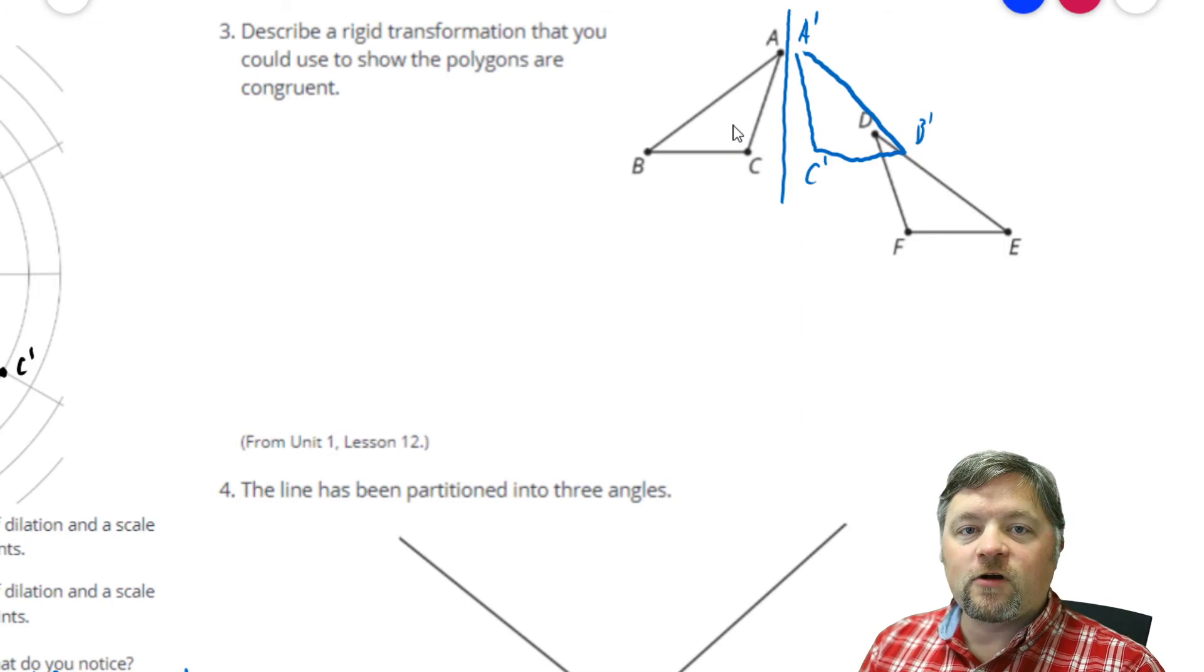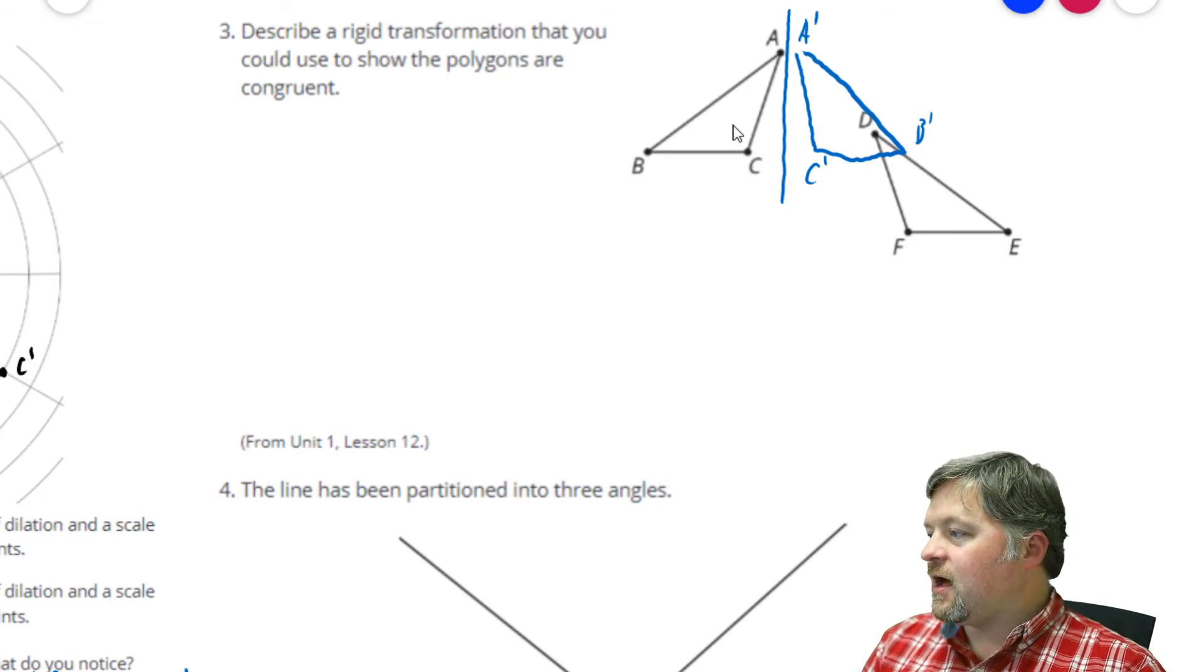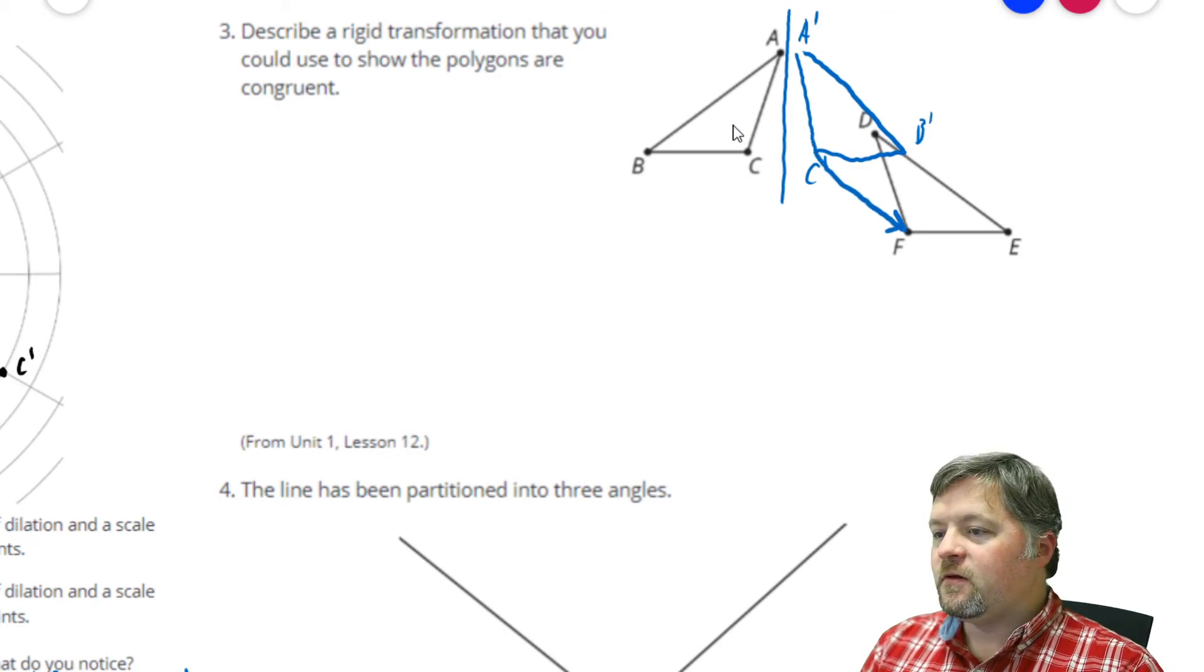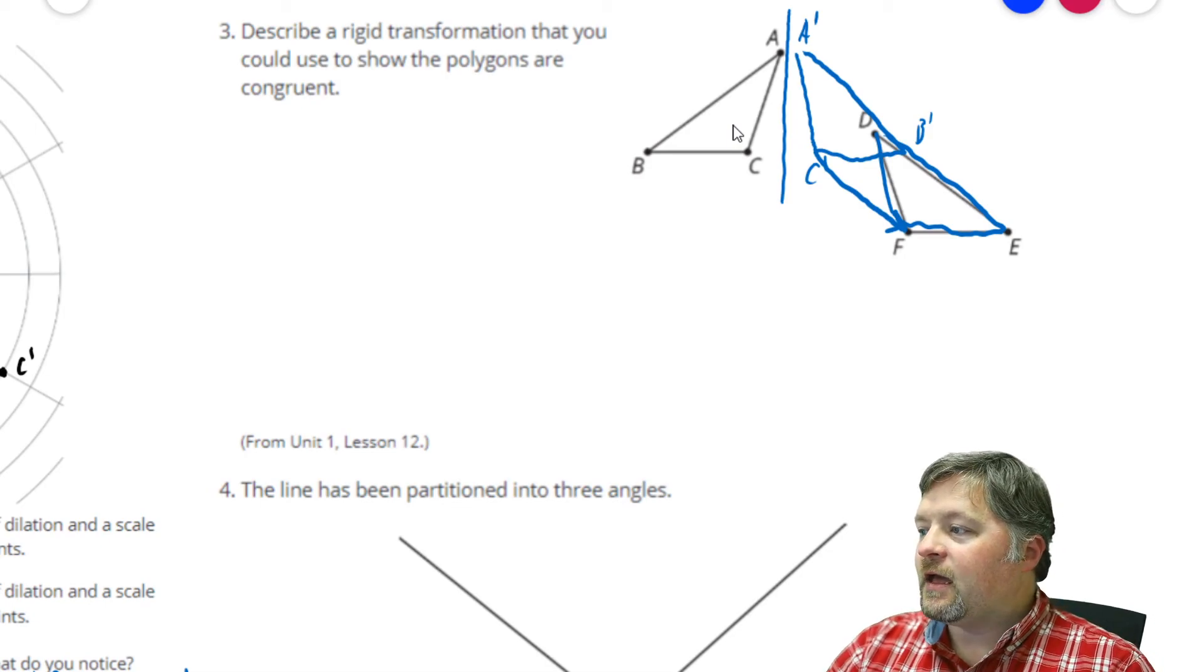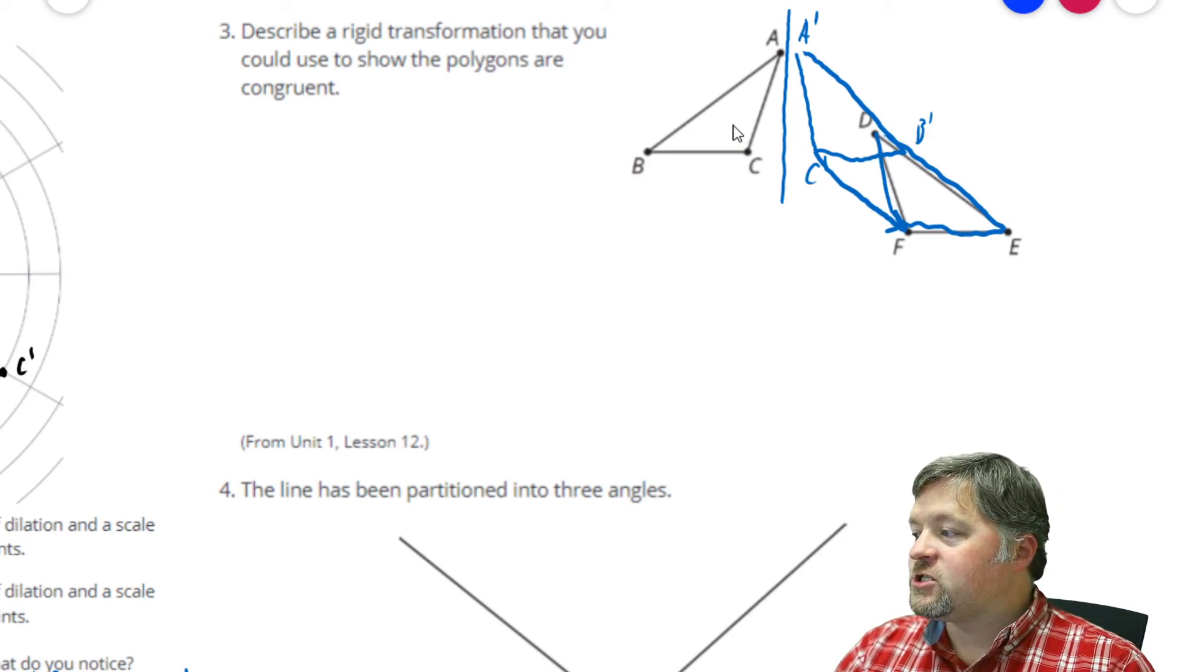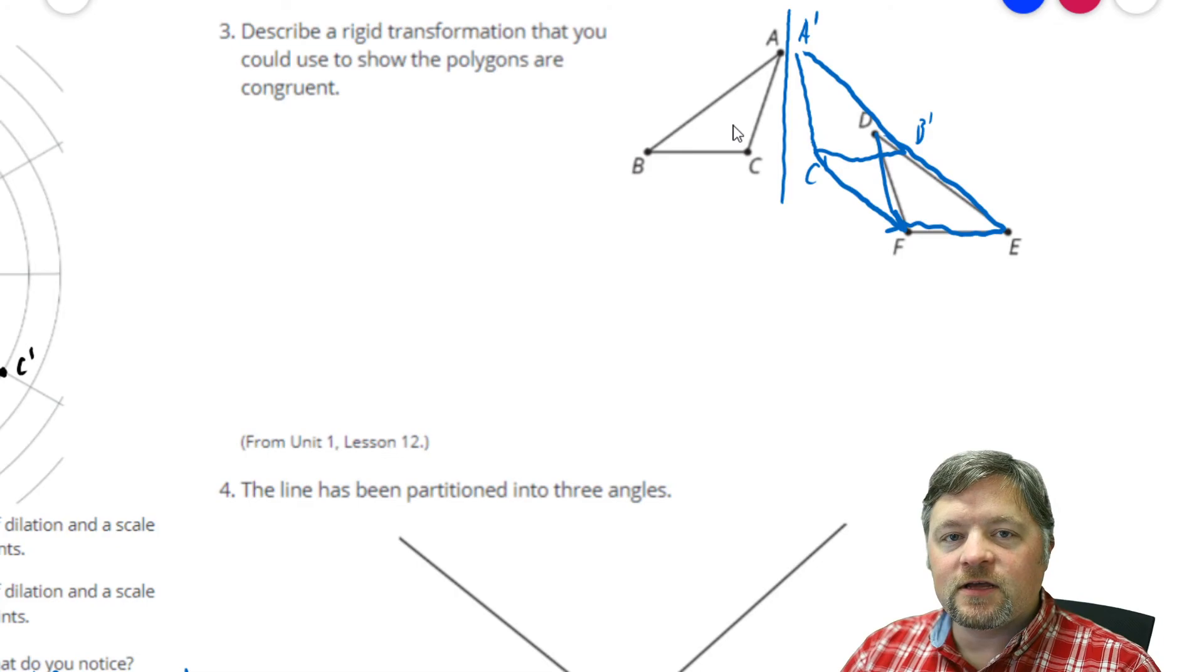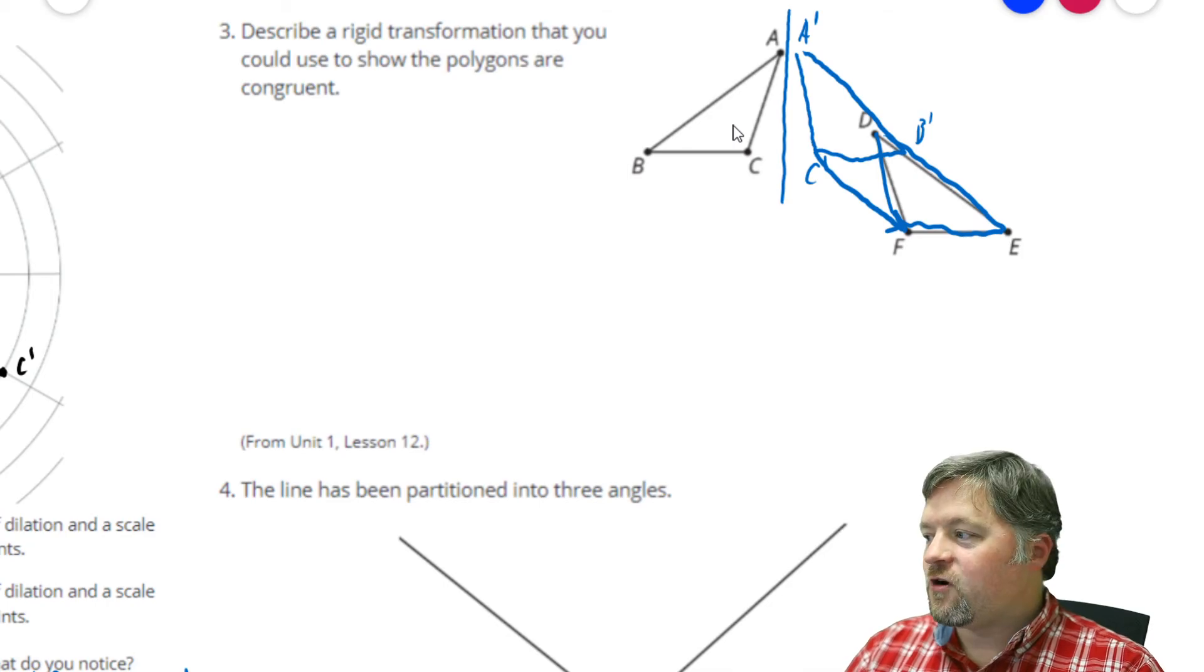Then, I would do a translation. A slide. Moving, let's use C prime to F. A translation from C prime to F. We'll put that triangle on top of this triangle. And, if there is a rigid transformation taking one to the other, the two triangles have to be congruent to each other.